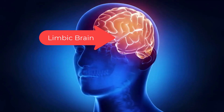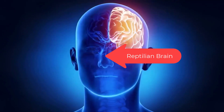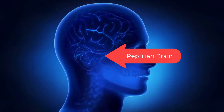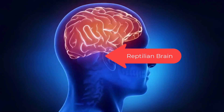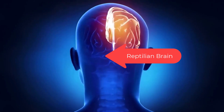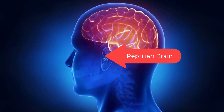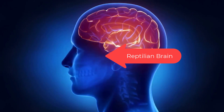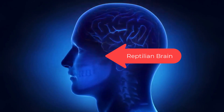The old brain — the reptilian brain — is the true decision-maker. It can take input from the other brains, but it can also decide faster than the blink of an eye, then use the other brains to justify the decision. The reptilian brain is visual and hardwired into the brain stem.